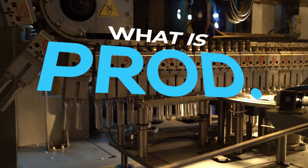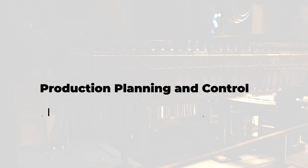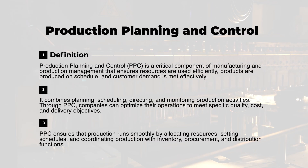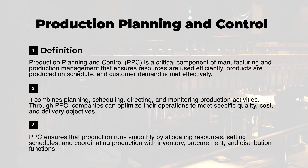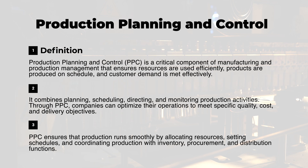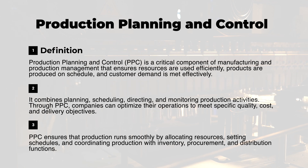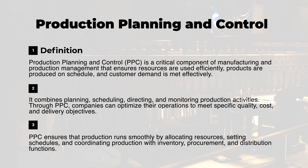So, what exactly is production planning and control? PPC is a critical component of manufacturing and production management that ensures resources are used efficiently, products are produced on schedule, and customer demand is met effectively. It combines planning, scheduling, directing, and monitoring production activities. Through PPC, companies can optimize their operations to meet specific quality, cost, and delivery objectives.